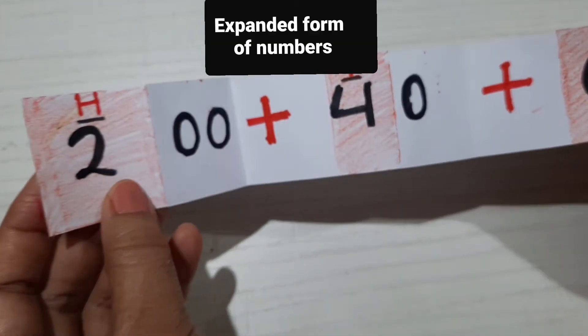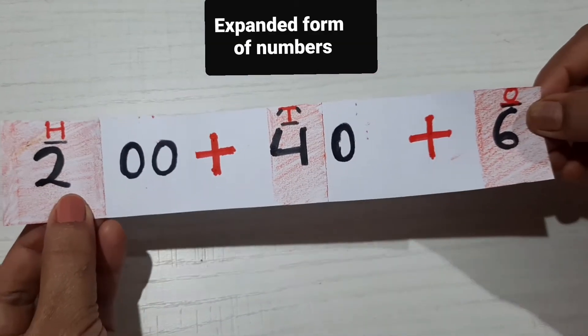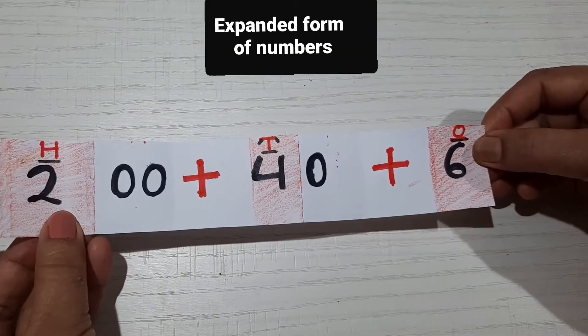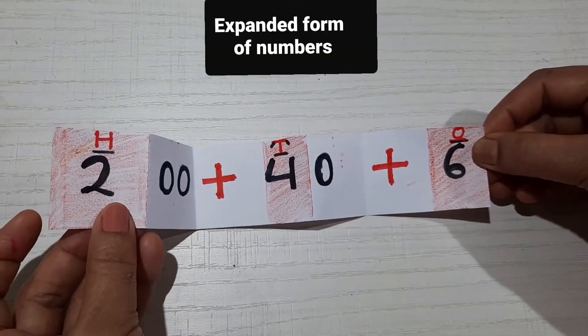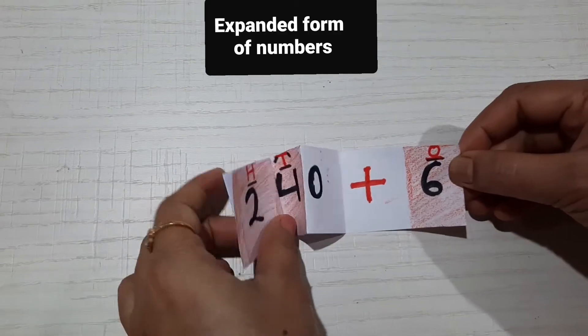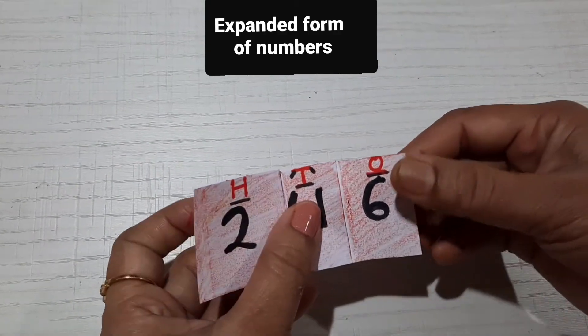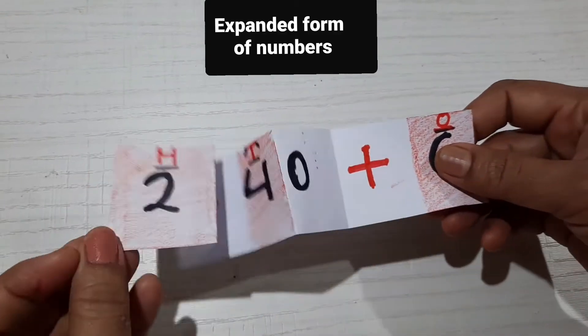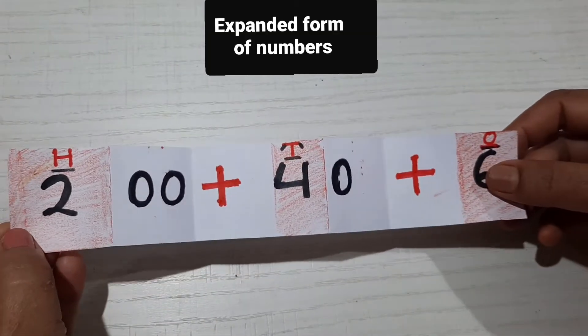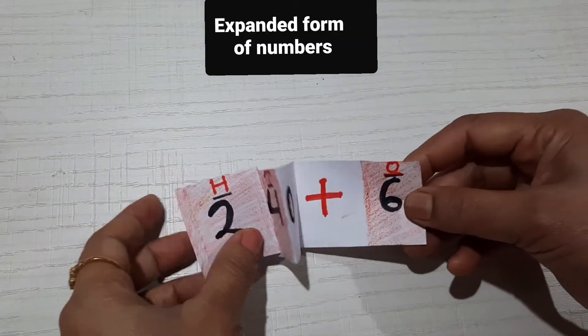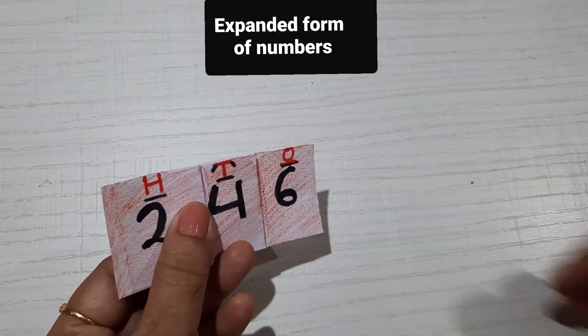The numbers: 200 plus 40 plus 6. I haven't done anything special here, only simply folded the paper as shown to you. We can also do this for any number of digits.